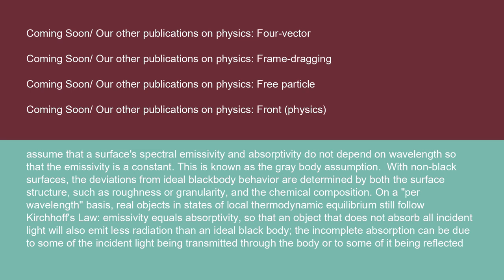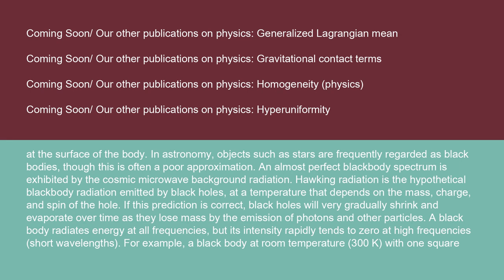The incomplete absorption can be due to some of the incident light being transmitted through the body or to some of it being reflected. In astronomy, objects such as stars are frequently regarded as black bodies, though this is often a poor approximation. An almost perfect black body spectrum is exhibited by the cosmic microwave background radiation.